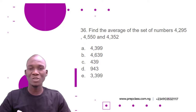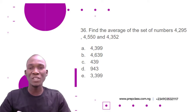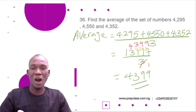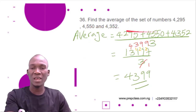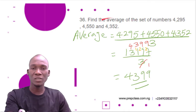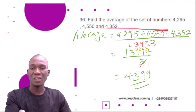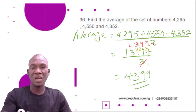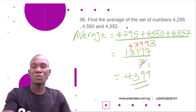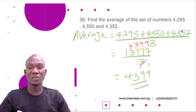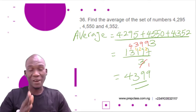To solve this question, you should know that average simply means mean. To find the mean, we sum the numbers together and divide by the count of numbers. We have 3 numbers: 4,295; 4,550; and 4,352. We divide by 3. Adding them gives us 13,197.